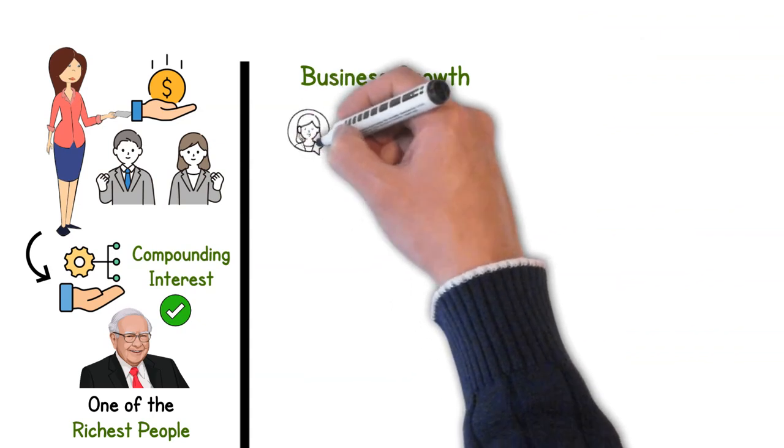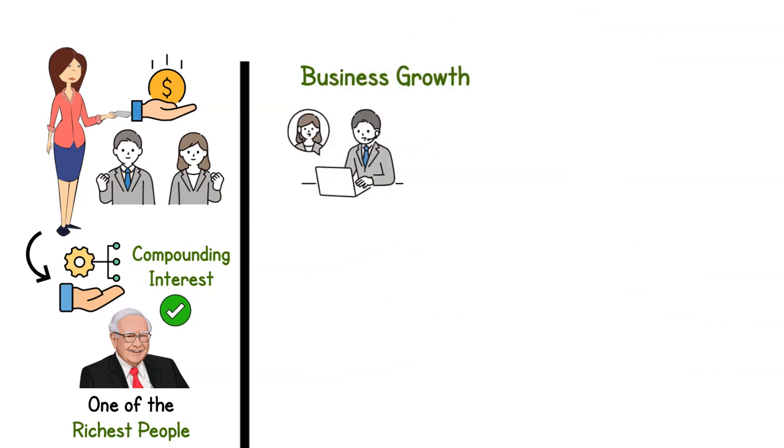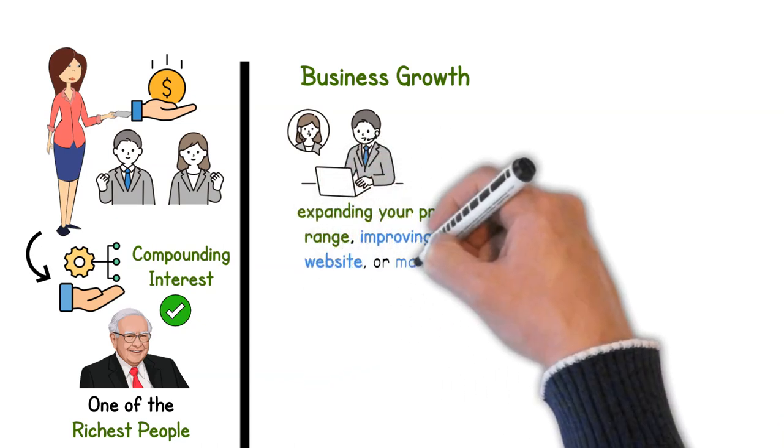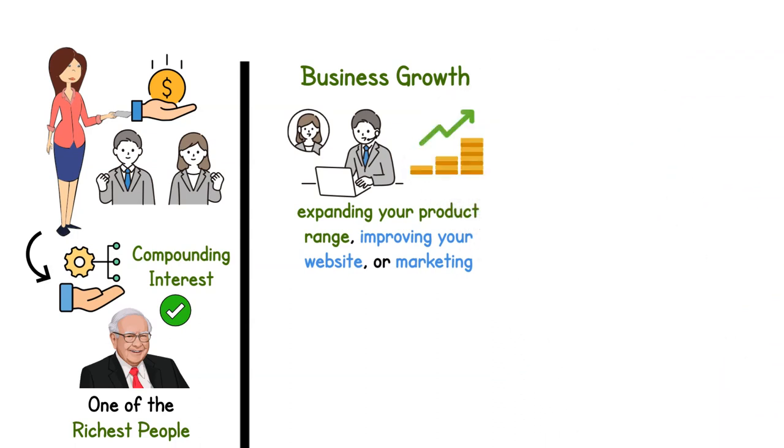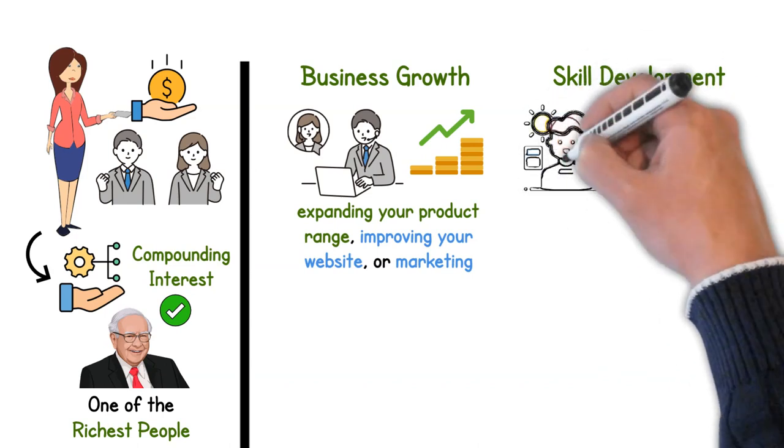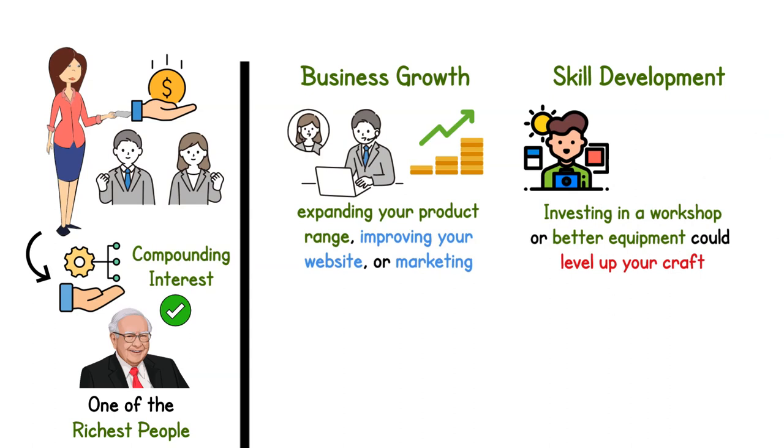Let's break it down a bit. Business Growth: let's say you're running a small online store. Profits could go into expanding your product range, improving your website, or marketing. This means attracting more customers and voila, higher sales in the future. Skill Development: maybe you've scored big in freelance photography. Investing in a workshop or better equipment could level up your craft, allowing you to charge more or take on bigger projects.